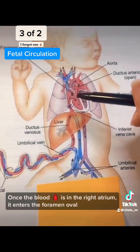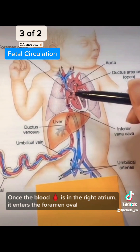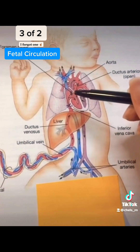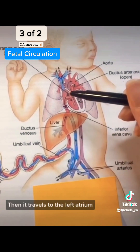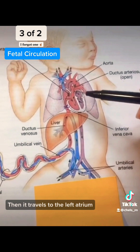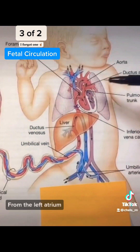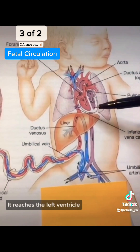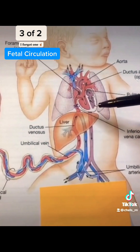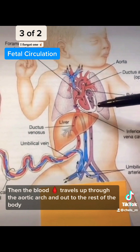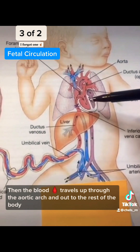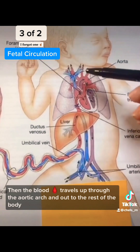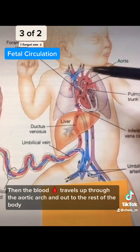Once the blood is in the right atrium, it enters the foramen ovale, and then it travels to the left atrium. From the left atrium, it reaches the left ventricle, then the blood travels up through the aortic arch, and out to the rest of the body.